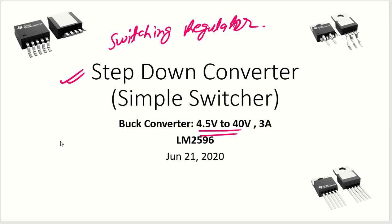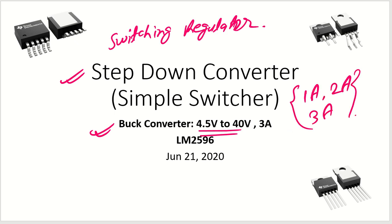Namaskar my dear friends. Let's try to understand the switching regulator design. In this workshop we'll try to understand how we can utilize this particular step-down converter, which is also called a simple switcher. This is a buck converter which can take input from 4.5V to 40V — a very high range input — and it can give you an output of up to 3 amperes. This is a very popular IC that has been used in several applications.